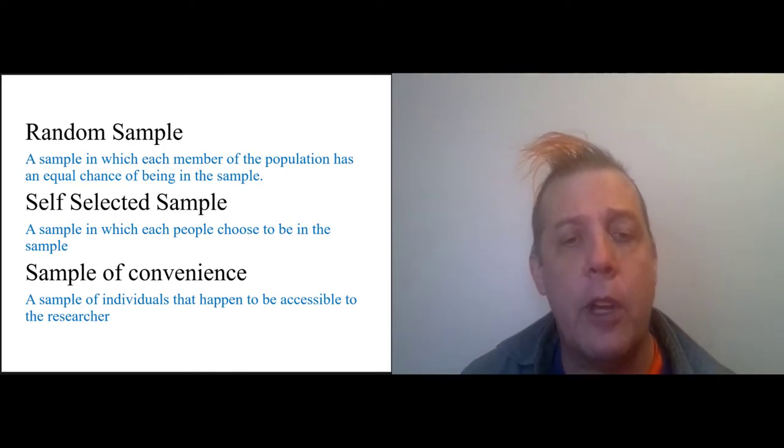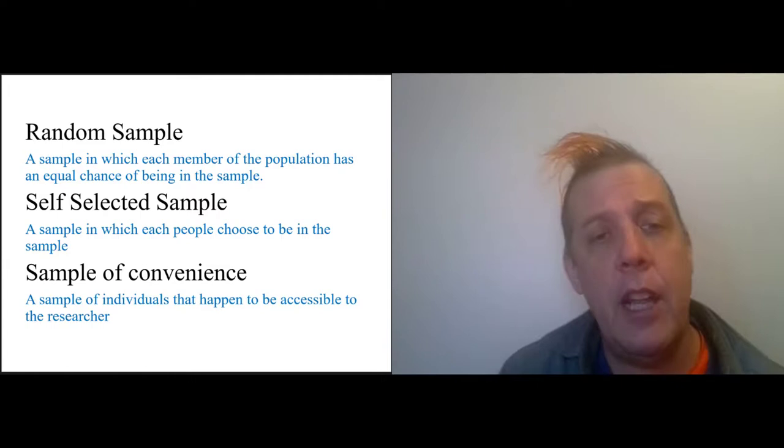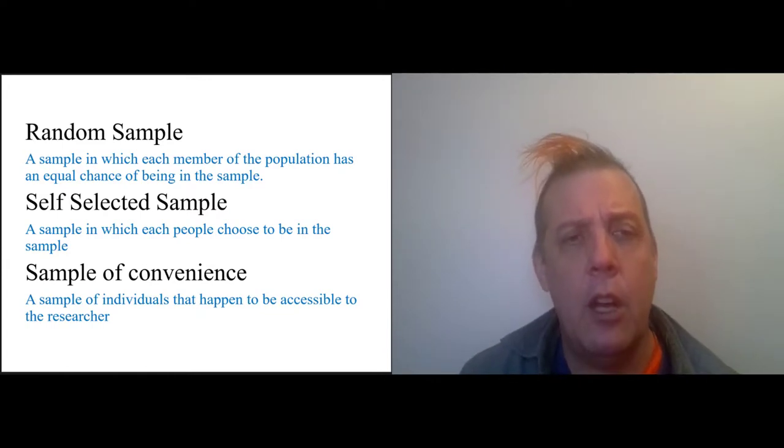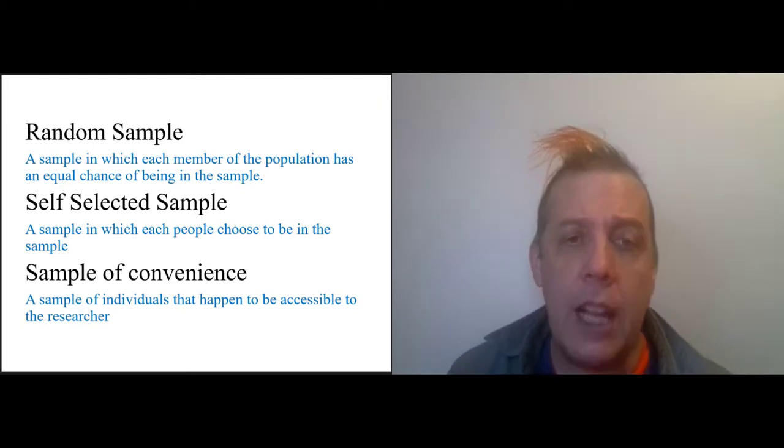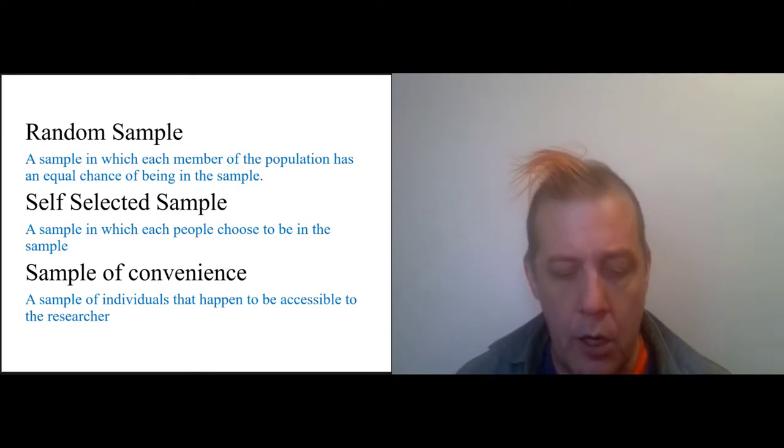So two common and less good forms of sampling are the self-selected sample and the sample of convenience. A self-selected sample is a sample in which people choose to be in the sample. Phone-in polls are like this. Self-selected samples are always heavily biased toward extremes, so self-selected phone-in polls and political surveys over-represent partisan views.